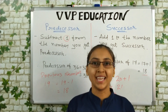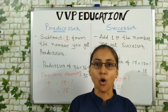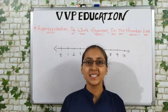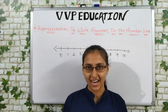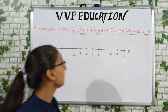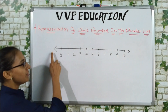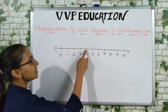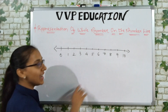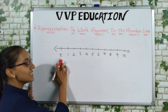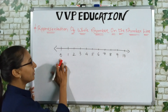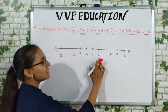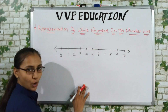Now our next topic is representation of whole numbers on the number line. First of all we have to draw one line, then mark small dots on the line, and one by one from zero we write numbers: 0, 1, 2, 3, 4, 5, 6 and so on.